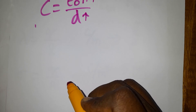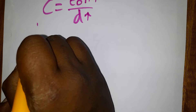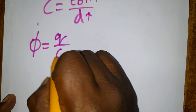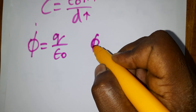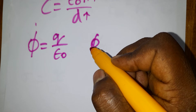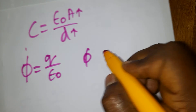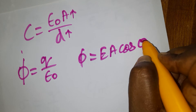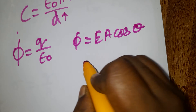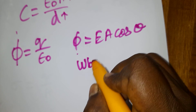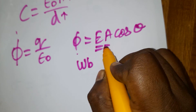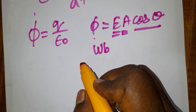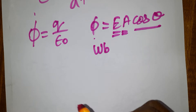Gauss's law: flux Φ = q/ε₀. The same flux can also be written as Φ = EA cosθ. The unit of flux is weber. Electric field times area times cosθ gives us the flux.